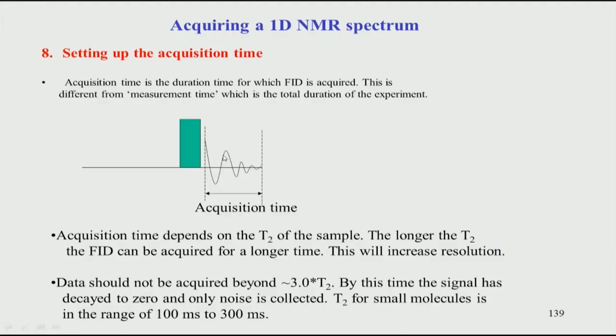In this class we will continue with the acquisition parameters — the different parameters required for setting up an NMR experiment. We saw in the last class a few important ones such as the relaxation delay between the scans, the 90-degree pulse width, locking, shimming, etc. Now we will see what parameters are to be looked at after the 1D pulse is applied. After the pulse is applied, you have the signal which is called FID.